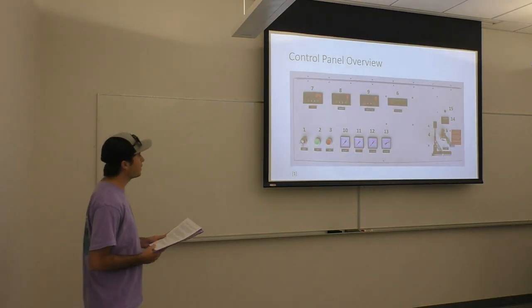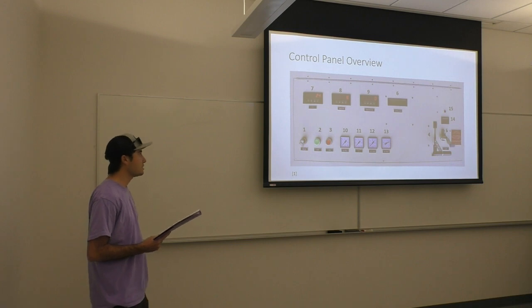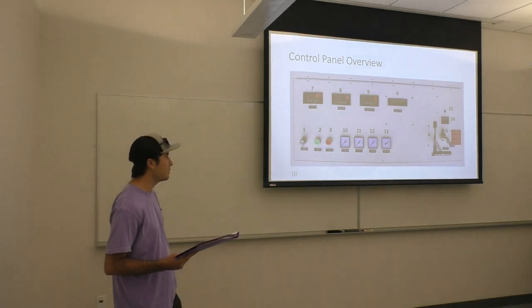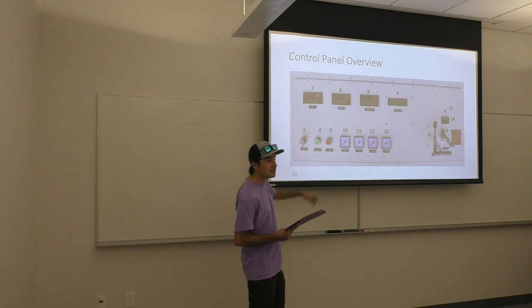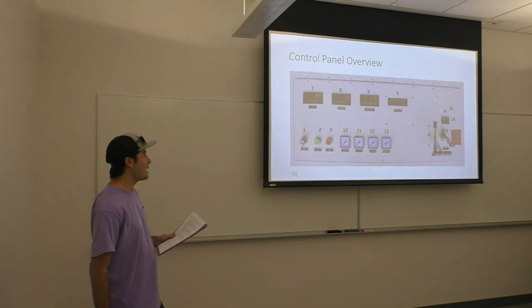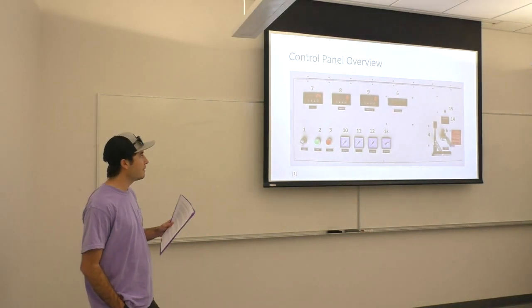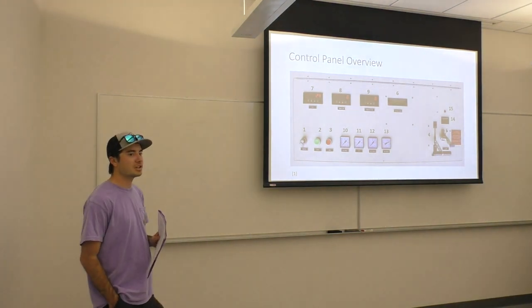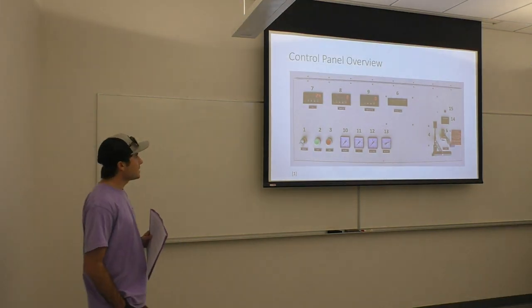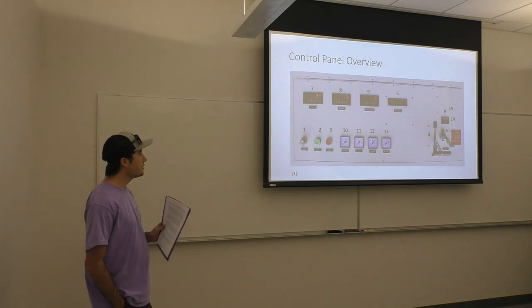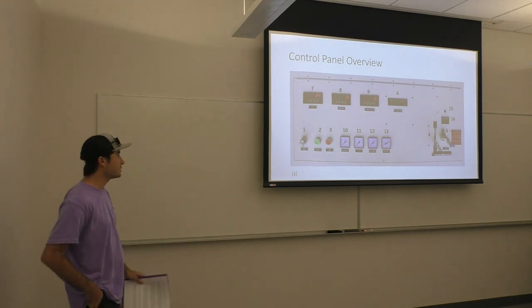This is the control panel. The controls are all numbered. Number one is the master key, which powers on the panel as well as the turbine. Two is the start button. Three is the emergency stop button. Four is the power level lever, which adjusts the power going to the turbine. Five is the load level lever, which adjusts the load on the free turbine. Six through fourteen are all gauges that monitor different aspects of the turbine. Fifteen is the generator over-speed warning light.